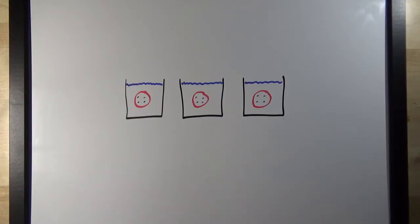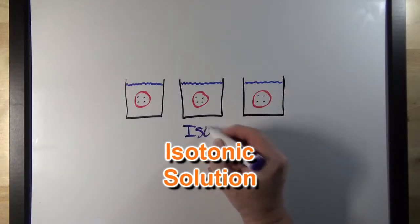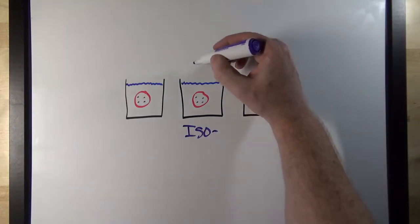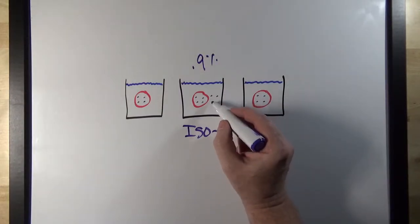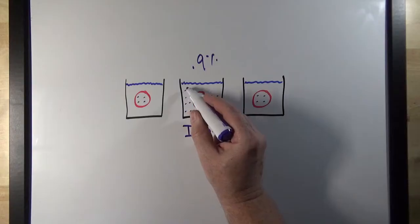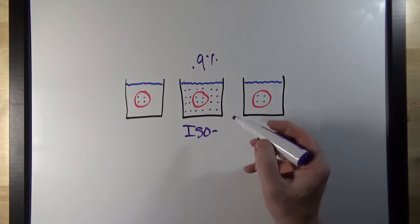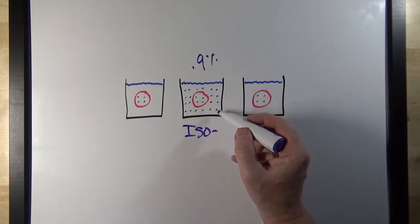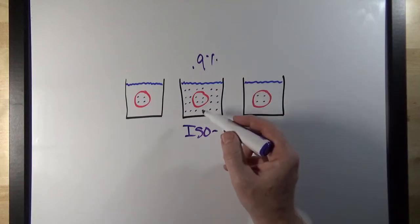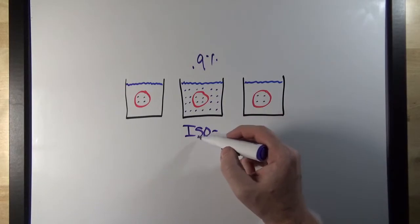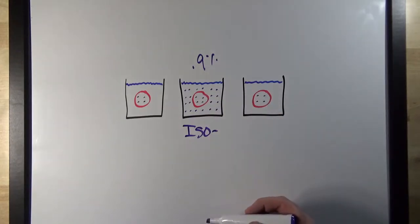We're going to put these red blood cells into three different solutions. The first solution is an isotonic solution. Isotonic means the solution has the same solute concentration as the solution inside the cell, which was 0.9%. I would represent that by drawing solute particles in the solution like so. Here we have an equal concentration of solute particles on the outside of the cell as inside the cell. Isotonic means the solute concentration on the outside of the cell is the same — 'iso' meaning the same — as the solute concentration on the inside.